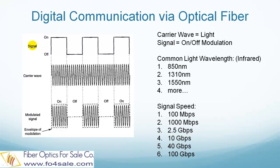The top is the electronic signal, which has much lower frequency than the carrier wave itself. When this signal is used to turn the laser on and off, the bottom illustration shows the generated pulse, which is a low-frequency signal envelope modulated on top of the high-frequency carrier wave.